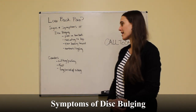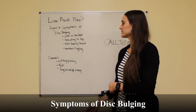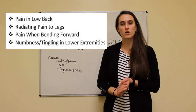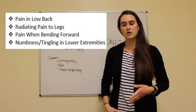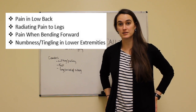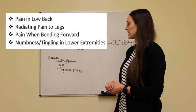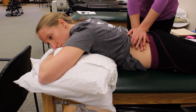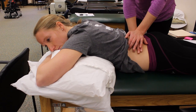One of the ways that you know that you have a disc problem is if you have any of these symptoms here. So pain in your lower back, it can be radiating to one or both of your legs. You can also have pain in your buttocks. And then it may also lead to pain when you bend forward, or numbness and tingling in either of the lower extremities, so either of your legs.